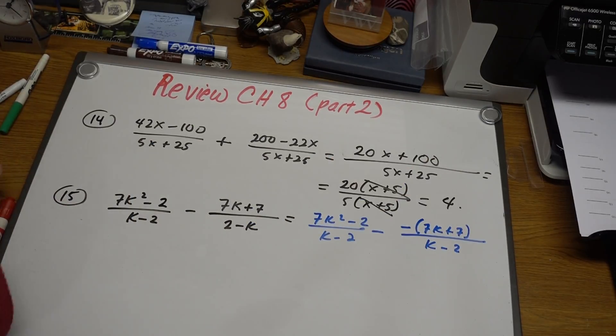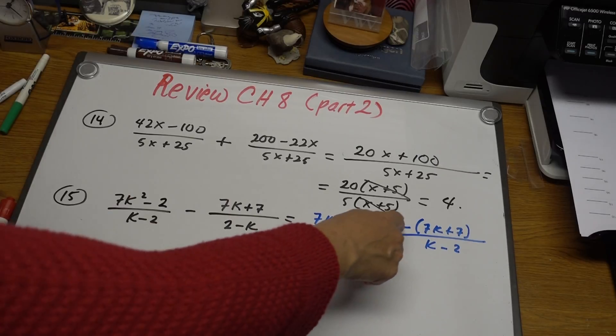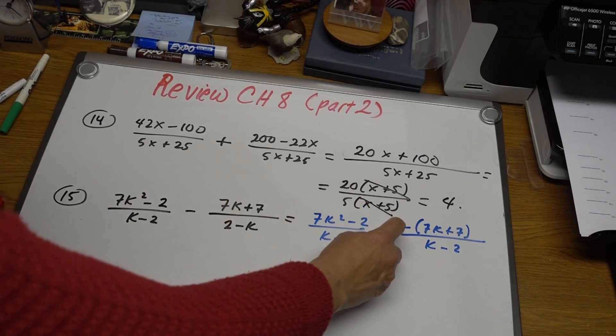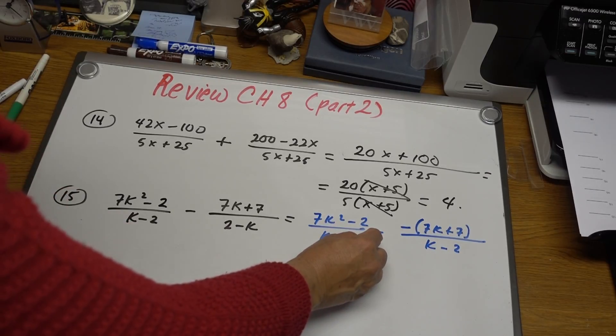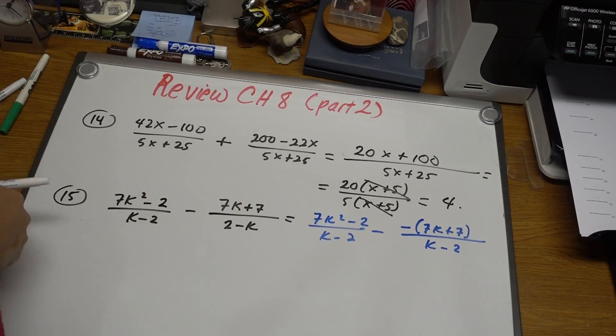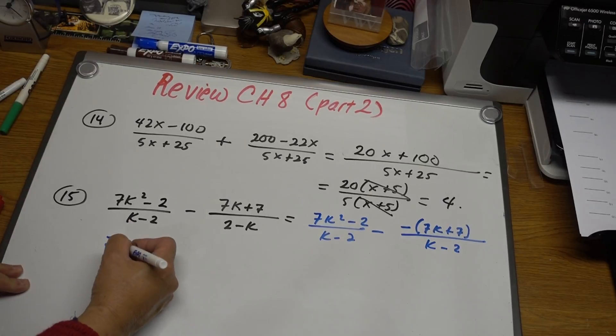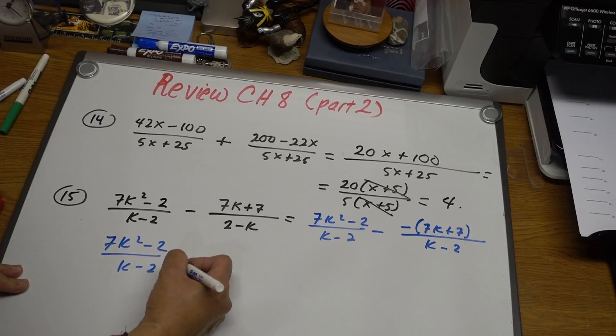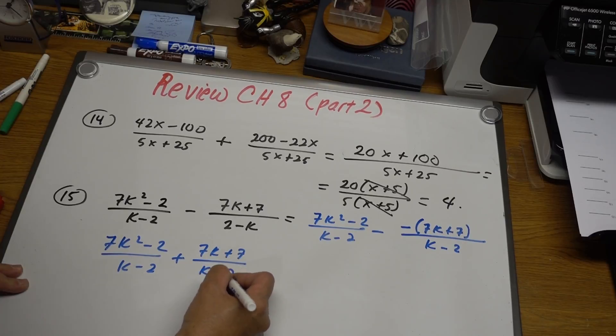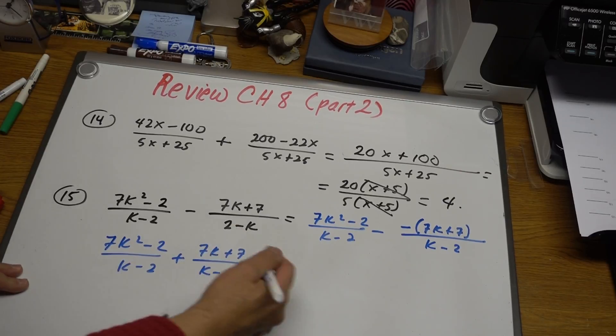From here, we can just go negative and negative is positive. Because this one negative is in front of the parenthesis, multiply with this negative becomes a positive. So we rewrite this as 7k squared minus 2 over k minus 2, plus 7k plus 7 over k minus 2. Now that we have the same denominator, rewrite it.